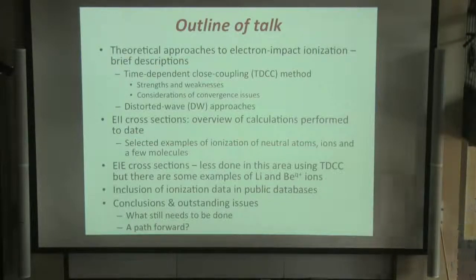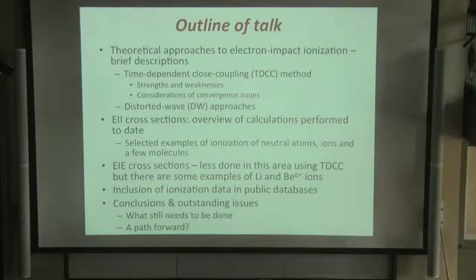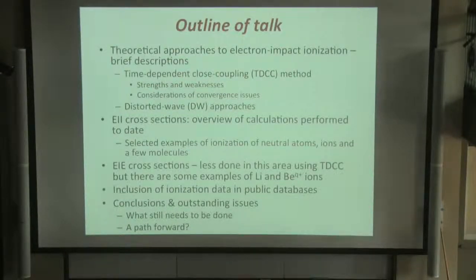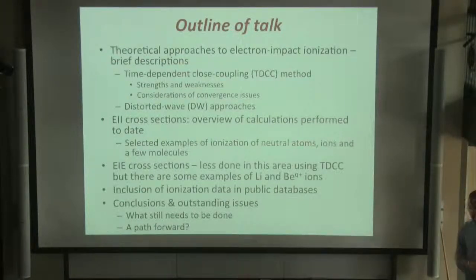I'd like to give an overview of some of the calculations that have been performed for ionisation cross-sections over the last decade or so, mostly with examples being neutral atoms, ions, and one or two molecules. And I'll touch a little bit on electron impact excitation using time-dependent close coupling, and show one or two examples.